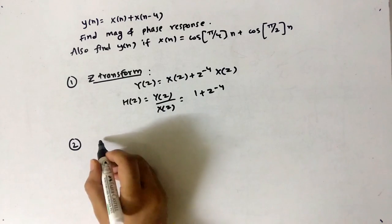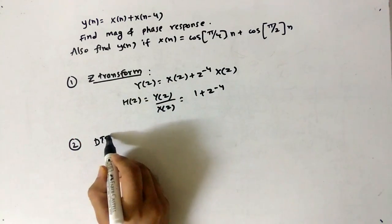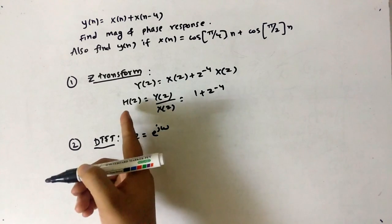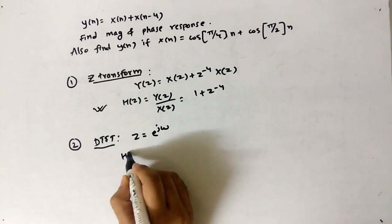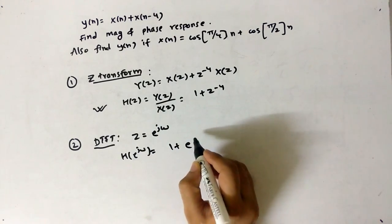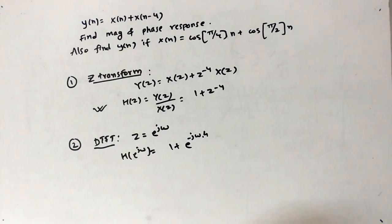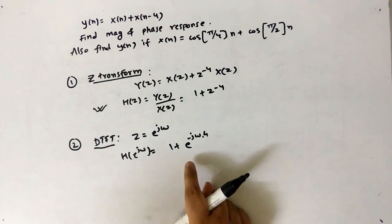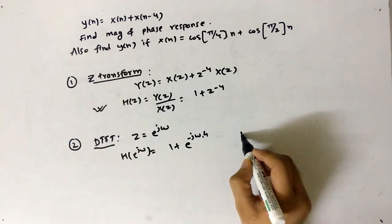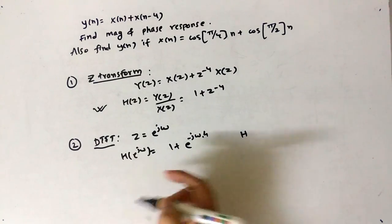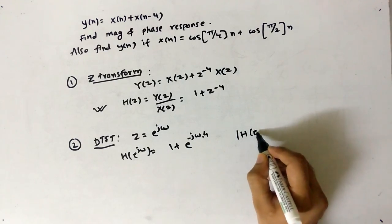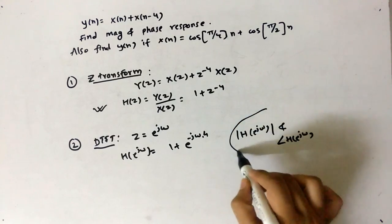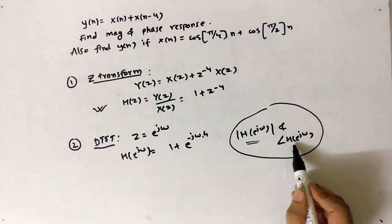The second step is to convert this Z-transform into the DTFT. To do that, simply substitute z = e^(jω). So H(e^(jω)) = 1 + e^(-j4ω). Now the question is how we can find the magnitude and phase response from this equation — we need to express it in the form |H(e^(jω))| and ∠H(e^(jω)).